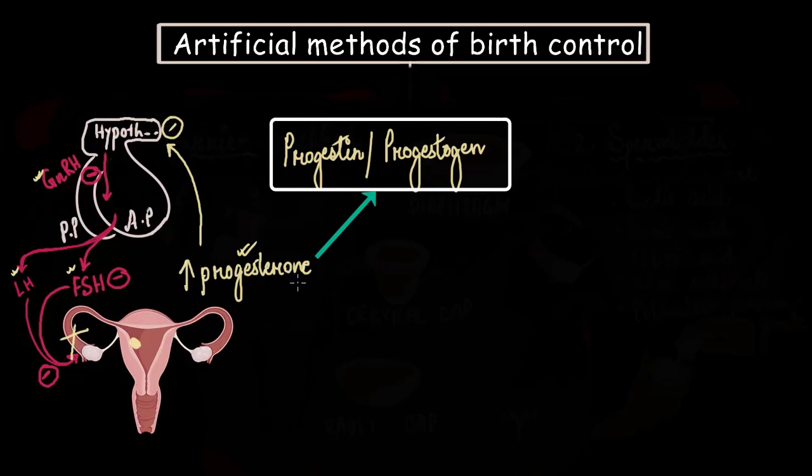And later, scientists found that apart from stopping ovulation, progesterone also thickens the cervical mucus, thereby stopping the sperms or making it hard for the sperms to swim up to the uterus. And not just that, progesterone also makes the uterine wall extremely thin, not suitable for implantation, which also became a downside because extreme thinning of the uterine wall caused heavy bleeding.